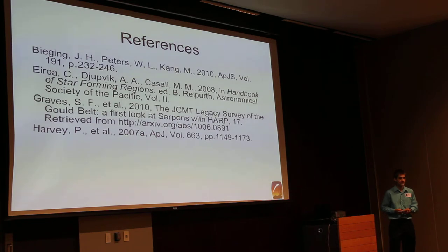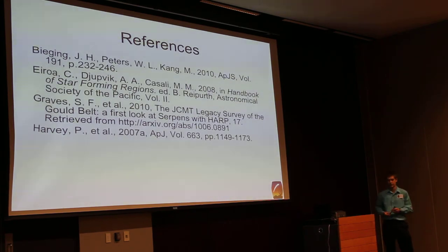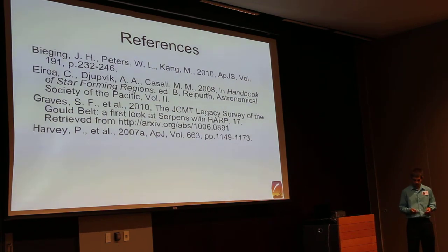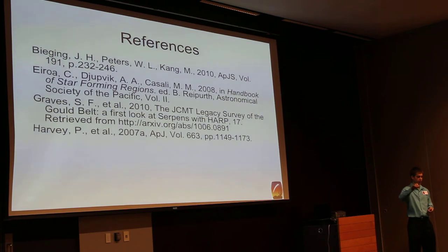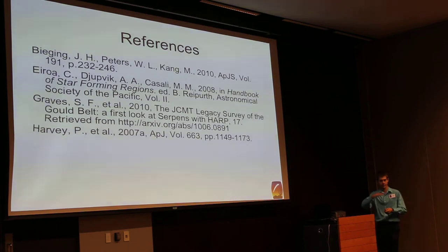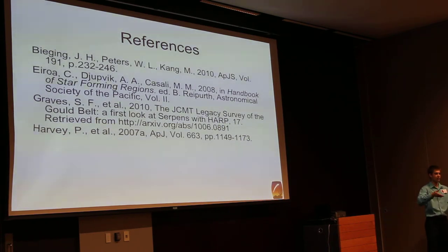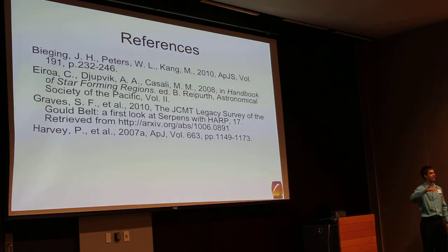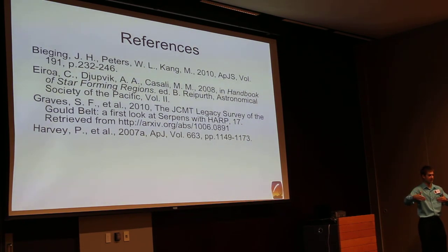Question: Could you talk about some of the sources of noise in submillimeter astronomy and how you suppress that? Answer: For every observation, we refer to a reference position that's emission-free in 12 and 13-CO, which allows us to subtract out the background scale. We also normalize each intensity map by comparing against a well-calibrated W51 source after each scan of the 39 fields — we know what the intensity of that source should be, and that tells us how to scale our background-subtracted data so all 39 fields match up consistently.